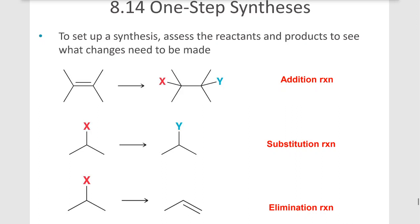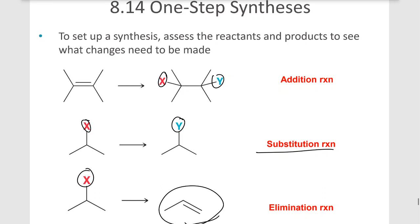Hello. In the next section we'll be discussing some simple one-step synthesis problems where we will predict the reagent we need to accomplish the transformation. In the first example, we have an addition reaction, where we are adding X and Y across a double bond, or we could replace X with Y in a substitution reaction, which we talked about in the last chapter, or we could pull off an X and an H to give us an elimination reaction, which we also discussed in the last chapter, to produce an alkene.